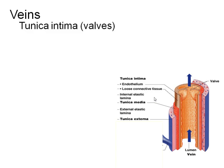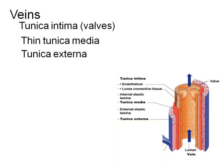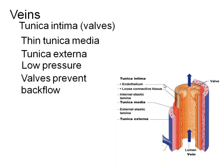The veins have a tunica intima that has been modified to have valves in it, much like the valves in the heart, to prevent backflow. The tunica media is much thinner. By the time blood gets to the veins, most of the pressure has dissipated. There's not a lot of pressure in veins, and that's why we don't need very thick muscle walls there.